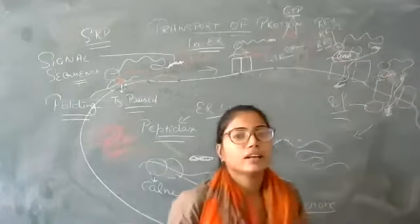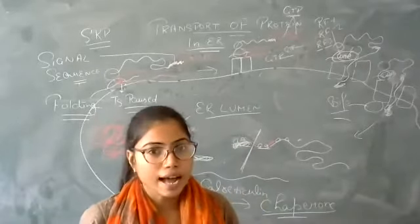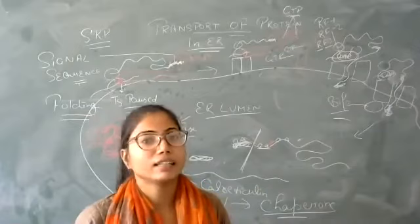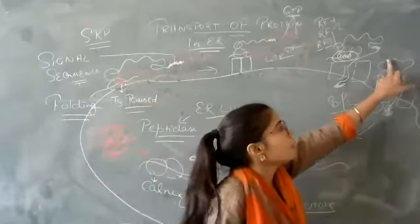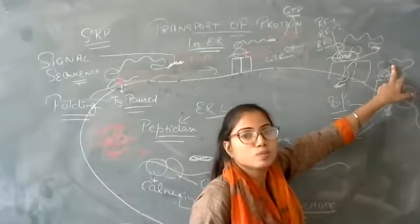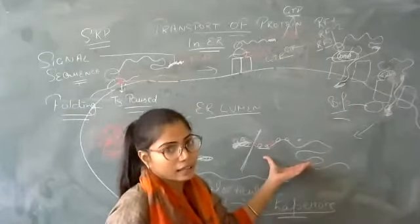The polypeptide chain is released by three release factors: RF1, RF2, and RF3. These release factors free the ribosome, and the complete polypeptide chain enters the ER lumen.